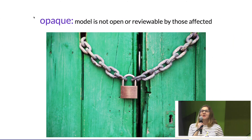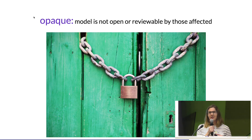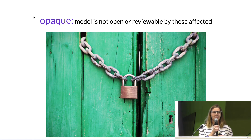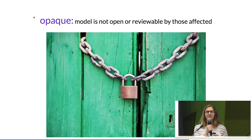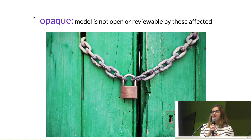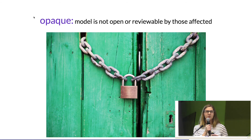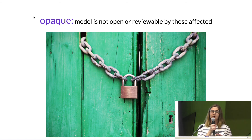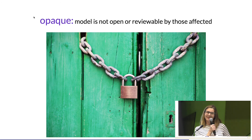Next is opaqueness: if the model is not open for review and no one can see it, that's a problem. For example, there are teacher assessment models used in D.C. to make firing decisions. If a teacher scores 6 out of 100 one year and 96 out of 100 the next year and asks why, they're not told. When a teacher is fired, they're not told why. The model is opaque and has a big impact on lives.